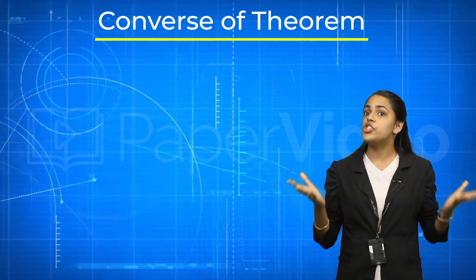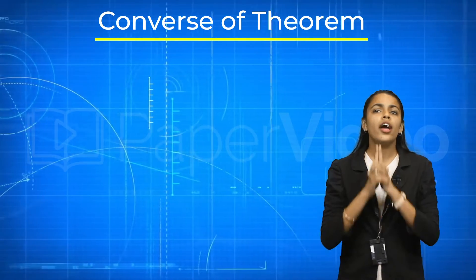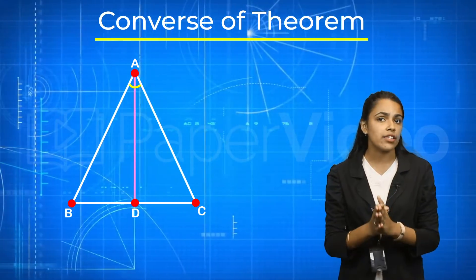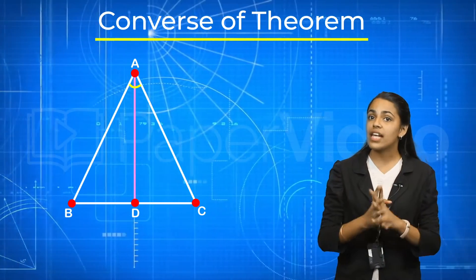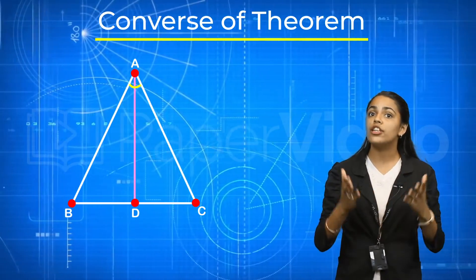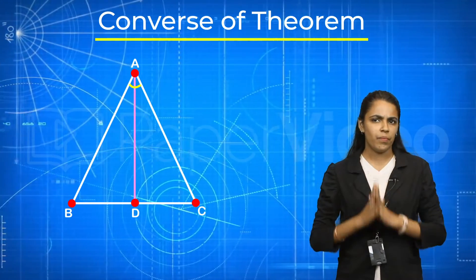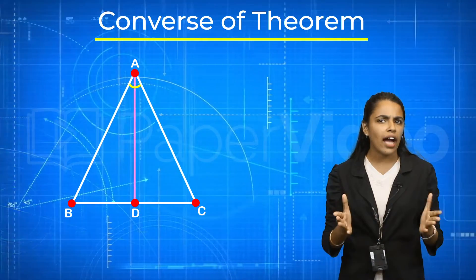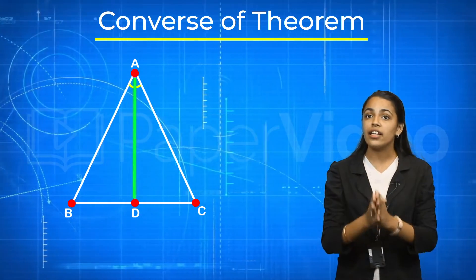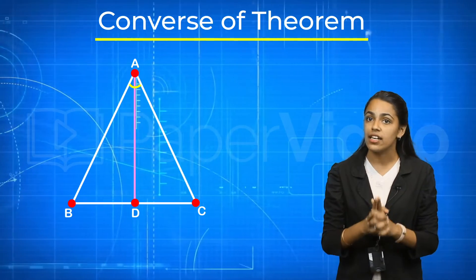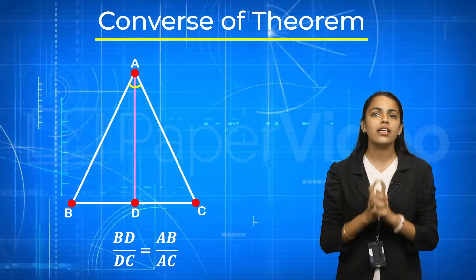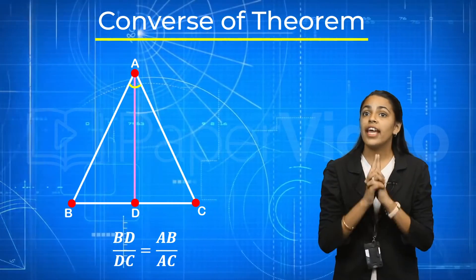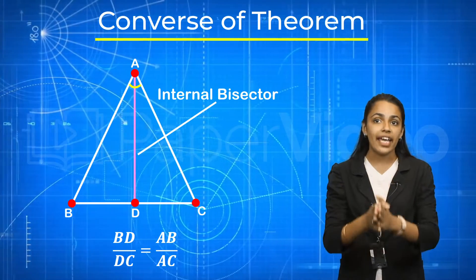The converse of the theorem is just opposite of it. According to the converse, if a line through one vertex of a triangle divides the opposite side in the ratio of the other two sides, then the line bisects the angle at the vertex. This means that if AD is a line in triangle ABC such that BD upon DC is equal to AB upon AC, then AD is the internal bisector of angle A.